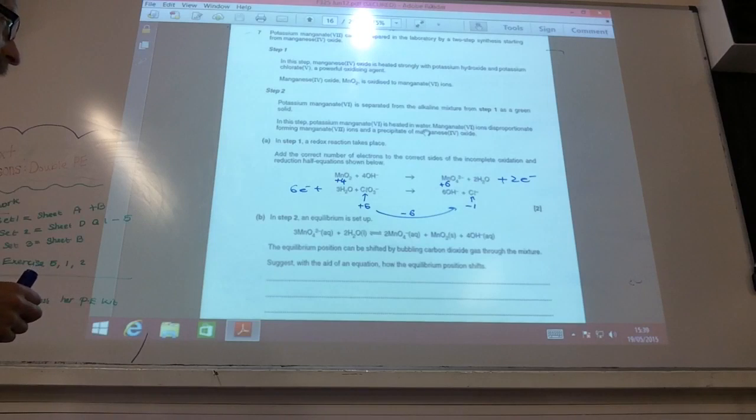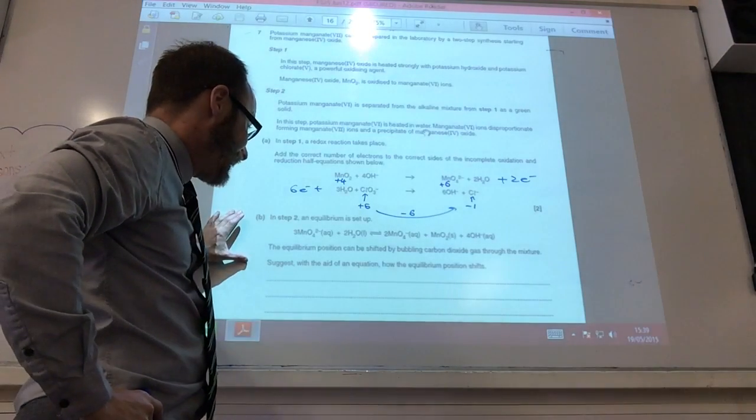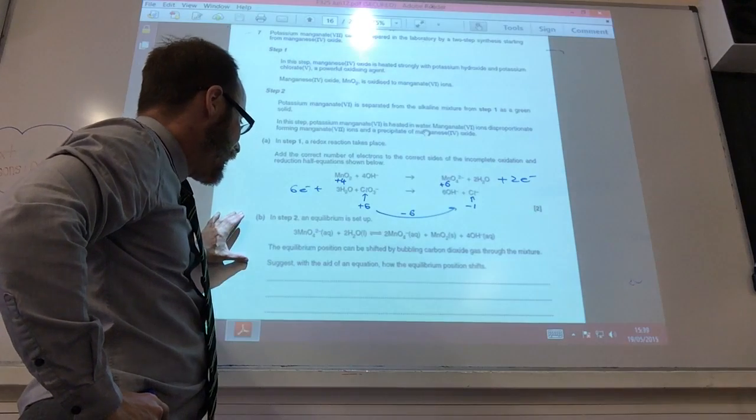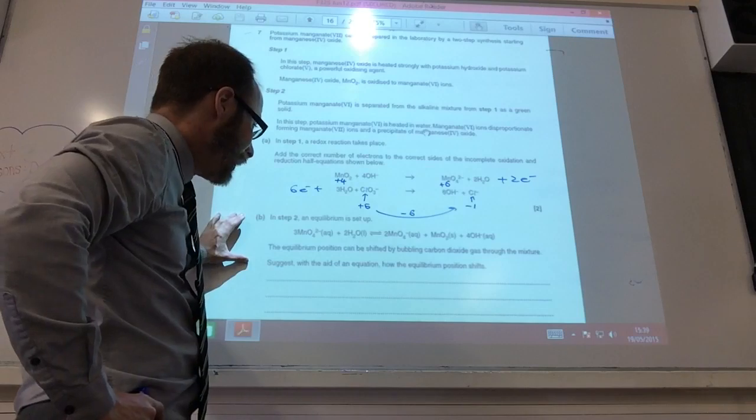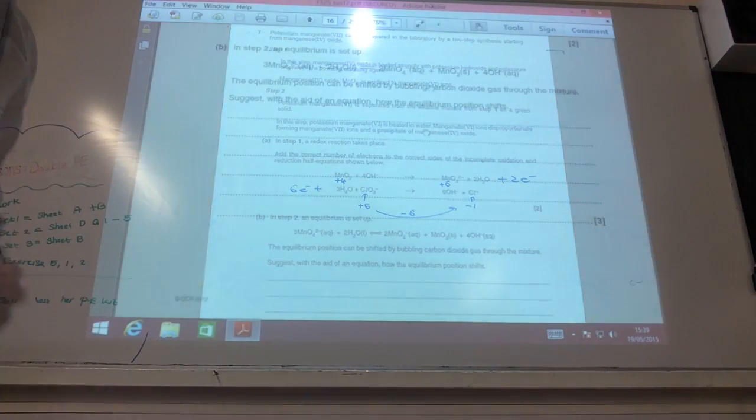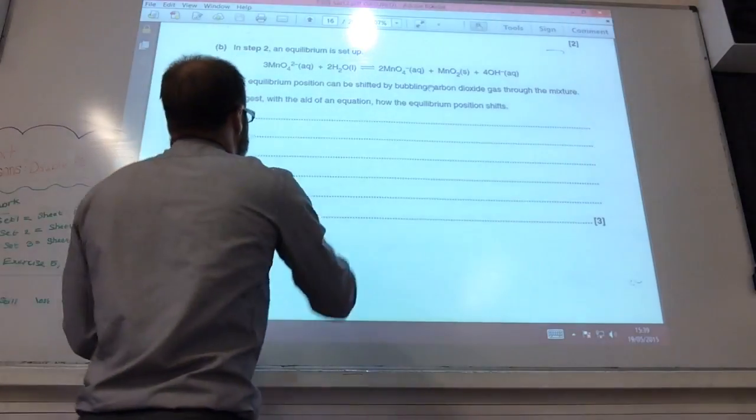The equilibrium position can be shifted by bubbling for this one, bubbling carbon dioxide gas through the mixture. Suggest with an equation how the equilibrium position shifts. Okay, so this may kind of freak you out, but it's not actually too bad.